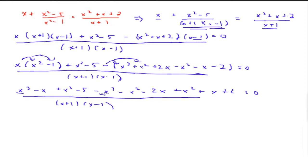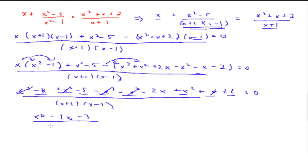Now let's put all the like terms together. We have x cubed and minus x cubed — those cancel out. We have x squared minus x squared plus x squared — the first two cancel, leaving x squared. We have minus x and positive x — those cancel out. However, we still have minus 2x. And with the constant terms, we have minus 5 plus 2, which gives us negative 3, all over the common denominator of x plus 1, x minus 1, equal to 0.